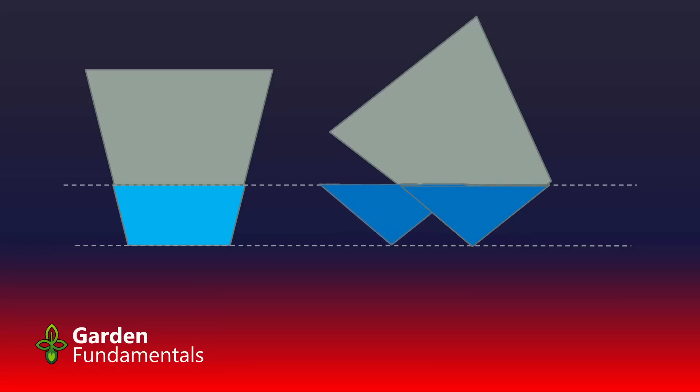There is less soil in the perched water table in the diagram on the right than there is on the one on the left. And since this area is saturated with water, the excess water has to run out. And that's exactly what we've seen when we tip the pot.